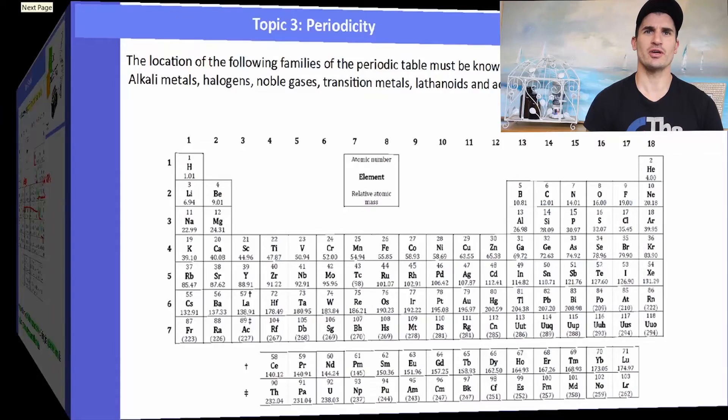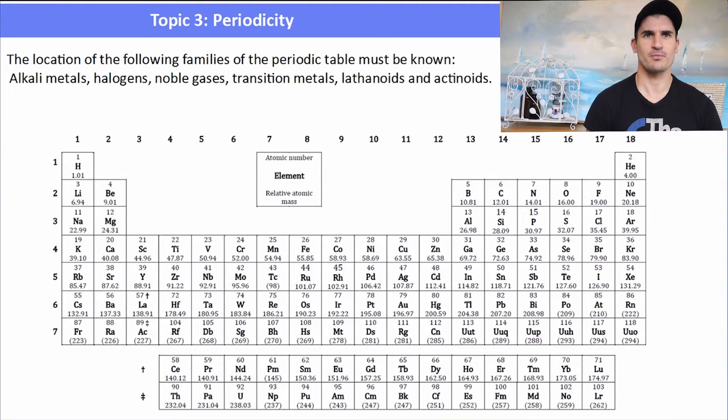We need to know the location of the following families on the periodic table. So the alkali metals - the alkali metals are group one of the periodic table, labeled here. Just be careful, hydrogen is not an alkali metal. I know that I've labeled it there, but it's not an alkali metal because it's a non-metal.